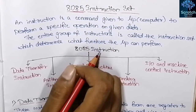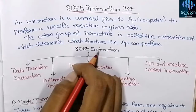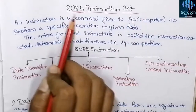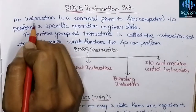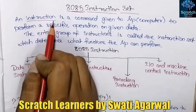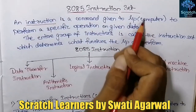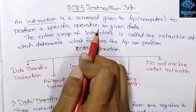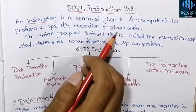Hello guys and welcome to our YouTube channel Scratch Learners. In this video we are going to discuss about the instruction set of the 8085 microprocessor. An instruction is a command given to the microprocessor or the computer to perform a specific operation on given data.